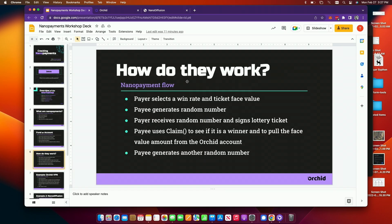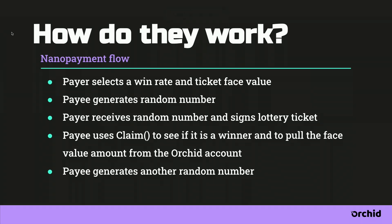I want to jump around and get into some examples. Basically, when you're sending a nano payment, you're using the law of large numbers and probability. The idea is that rather than sending somebody a dollar, you send them a one-out-of-a-hundred chance of winning a hundred dollars. Rather than sending a dollar a hundred times and incurring a hundred transaction fees, I'm going to send you a one-out-of-a-hundred chance of winning a hundred dollars. If I do that enough times, the right amount of value is going to be sent. We call it stochastic payments, nano payments, probabilistic payments.